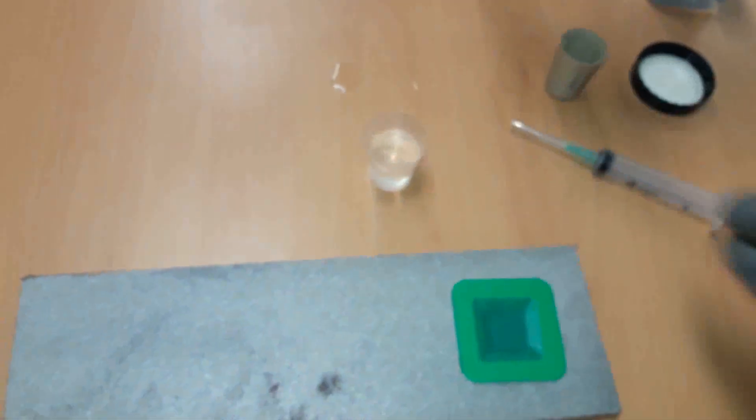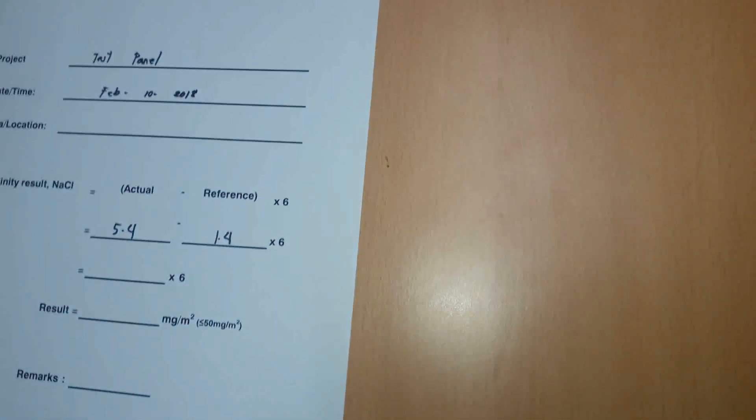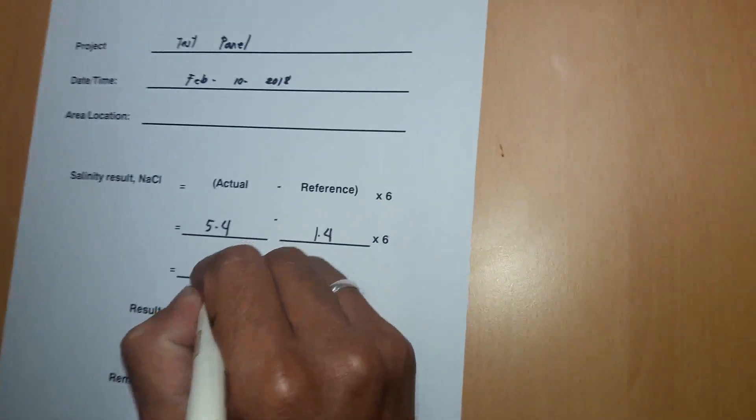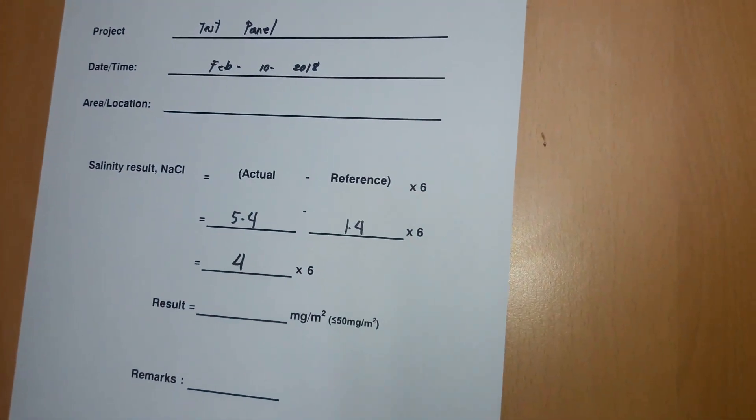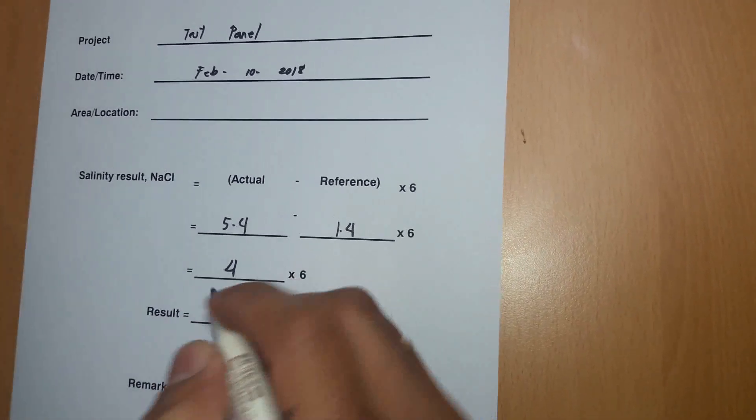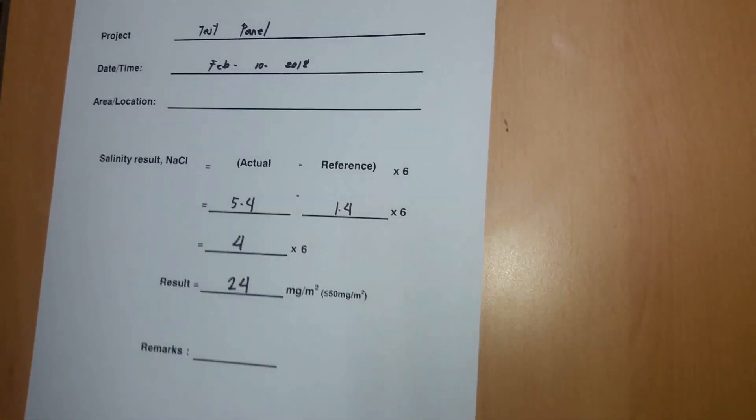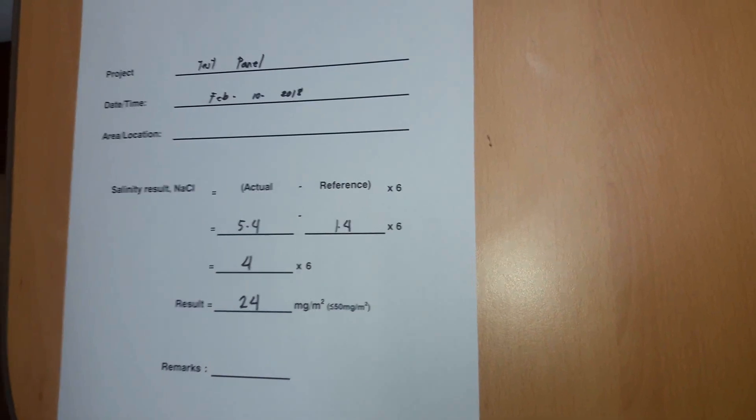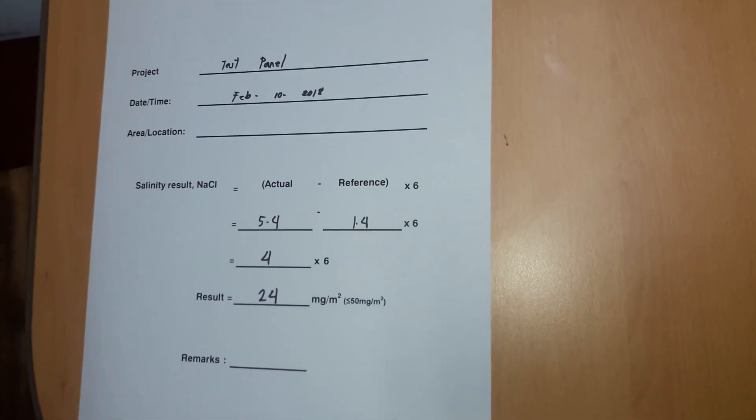Calculate the difference between the actual value and the reference value which was determined earlier. Conductivity shall be measured and converted to soluble salt limit using the following formula.